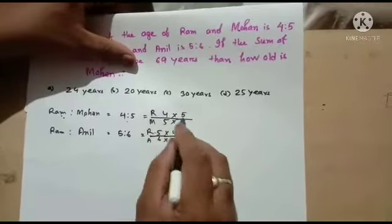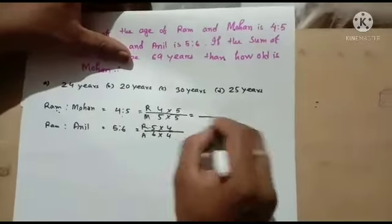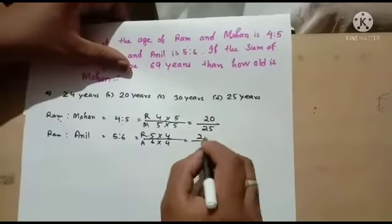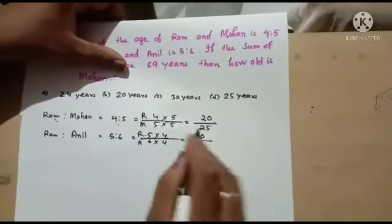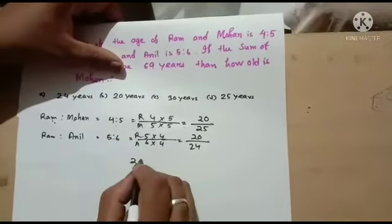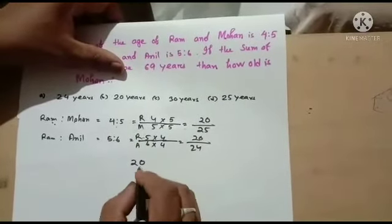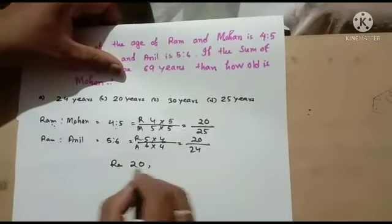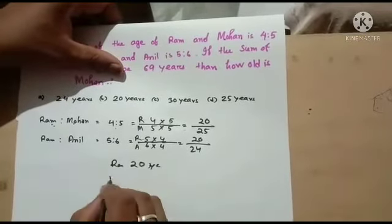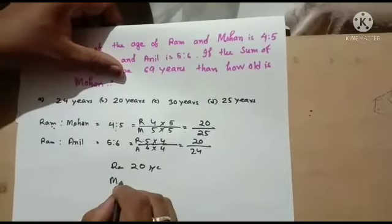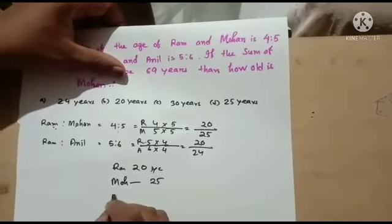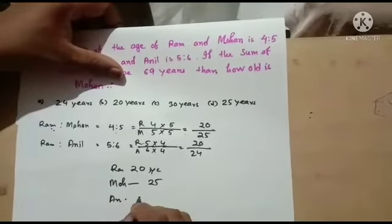Working through the calculations using the ratios, we find Ram is 20 years old. Mohan's age works out to 25 years, and Anil's age can be calculated from the given ratio.